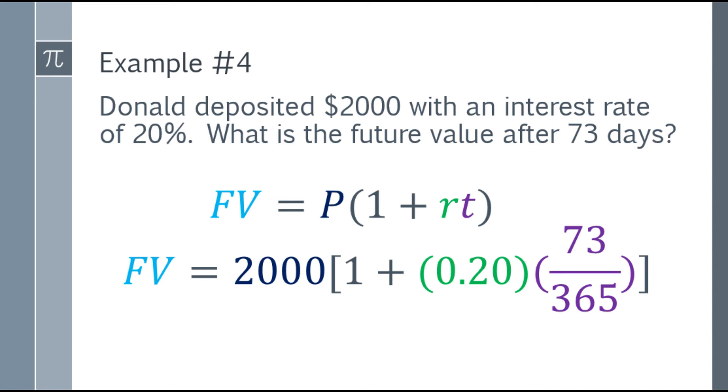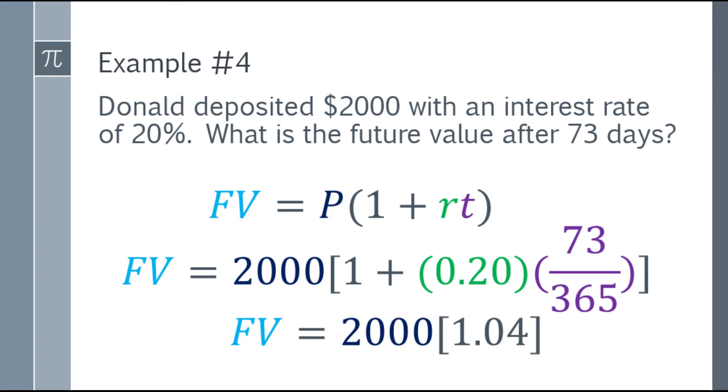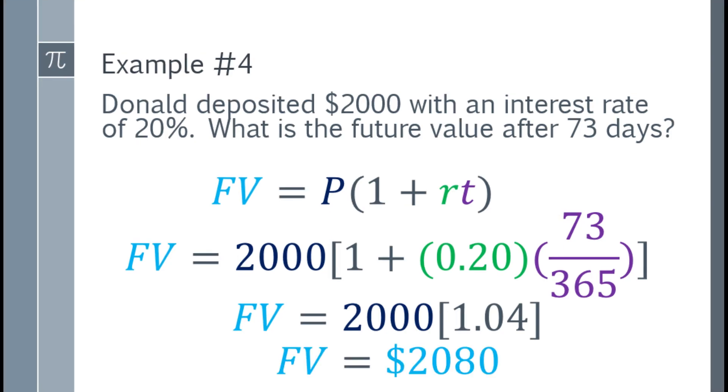So for that one, we just multiply them both: 0.2 times 73 over 365. If you add 1, the answer is 1.04. Now, multiply by 2,000, and you will have an answer of $2,080.